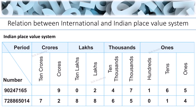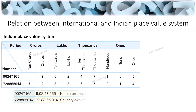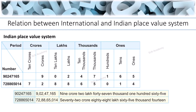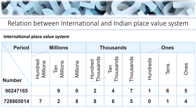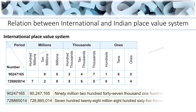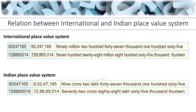First, write these numbers into the Indian number system chart and start arranging them from the ones position. Now add commas after each period as per the Indian system of numeration. Arrange the same numbers in the international number system chart as well, starting from the ones period, and separate the periods using commas. This is how we can convert numbers from one number system to another.